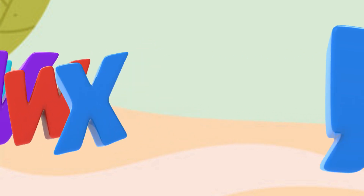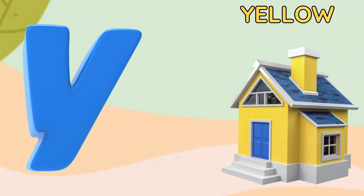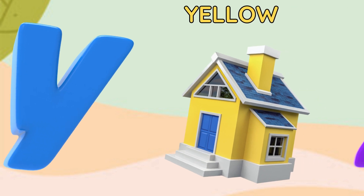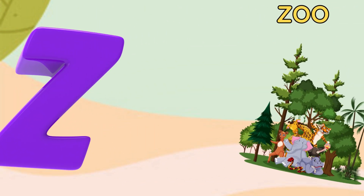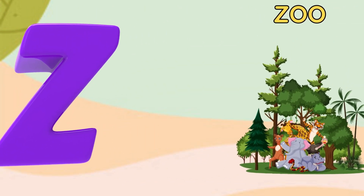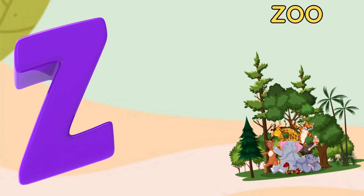Y is for yellow, ye-ye-yellow. Z is for zoo, z-z-zoo.